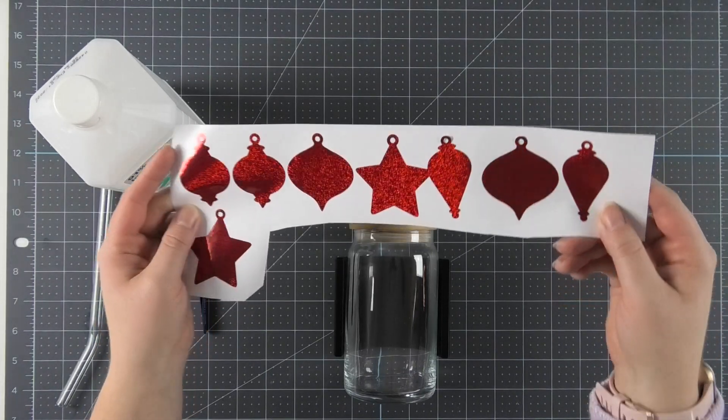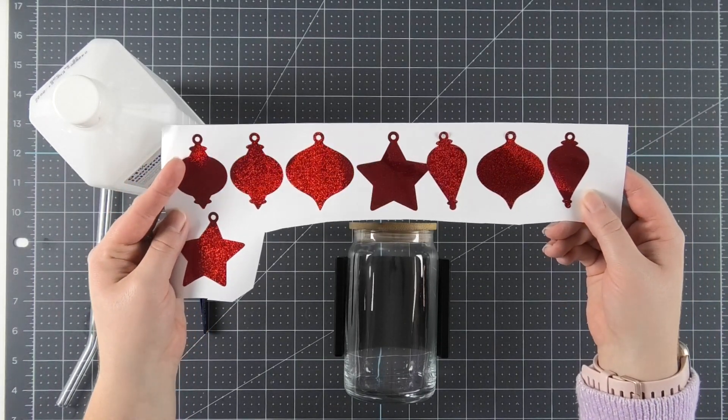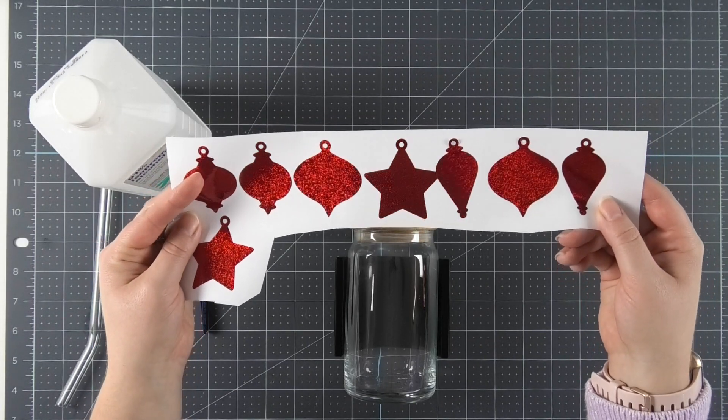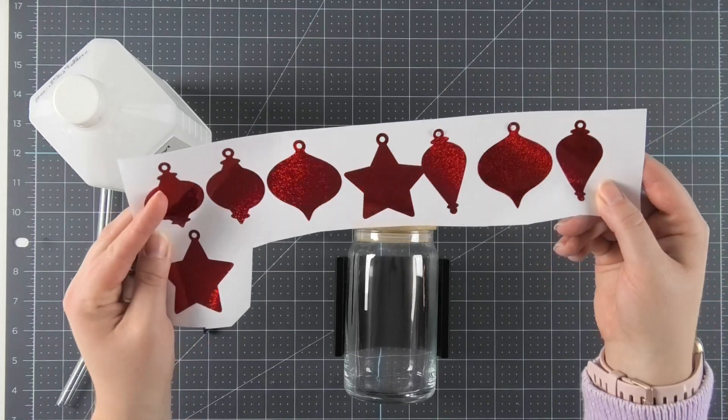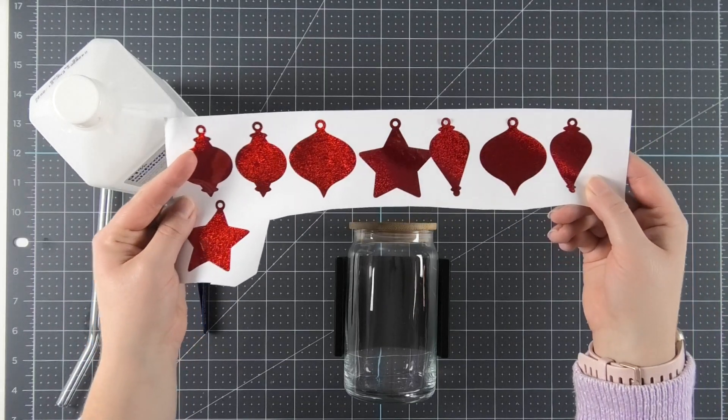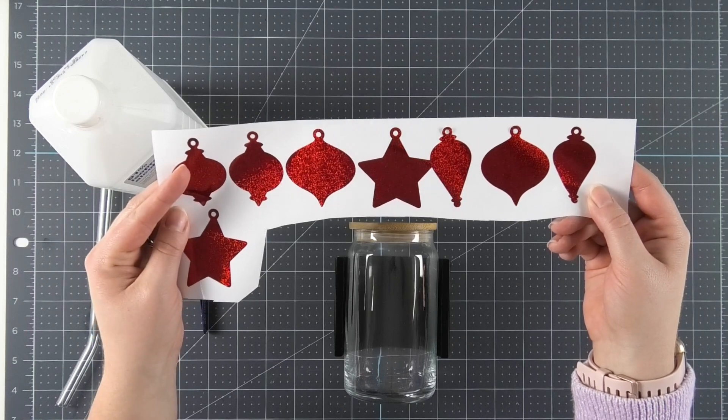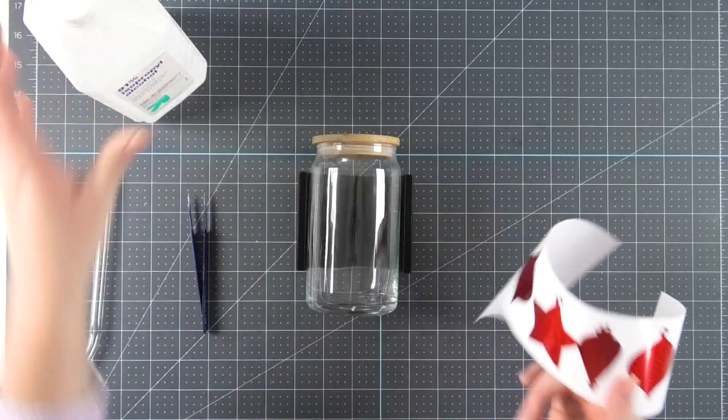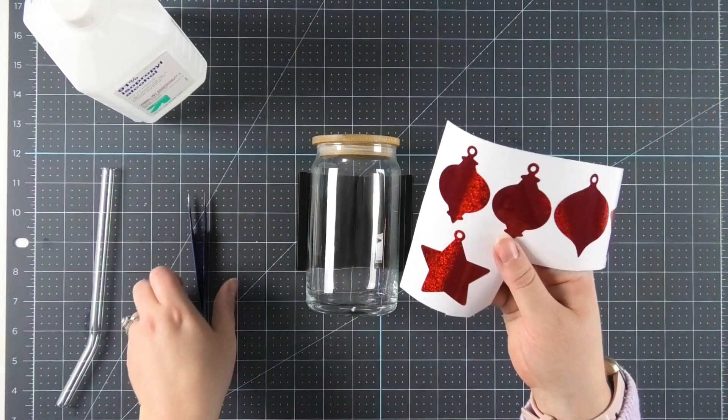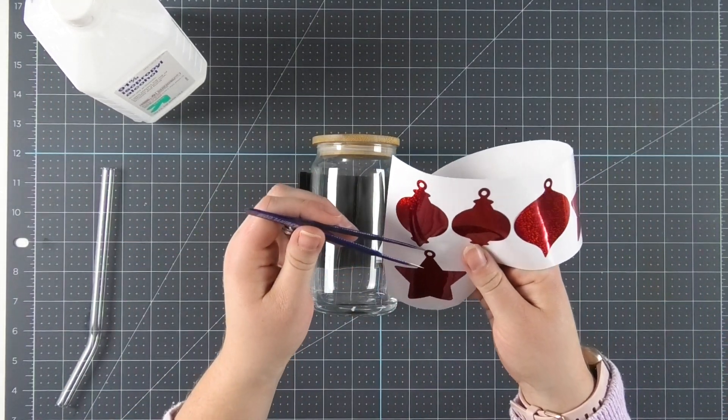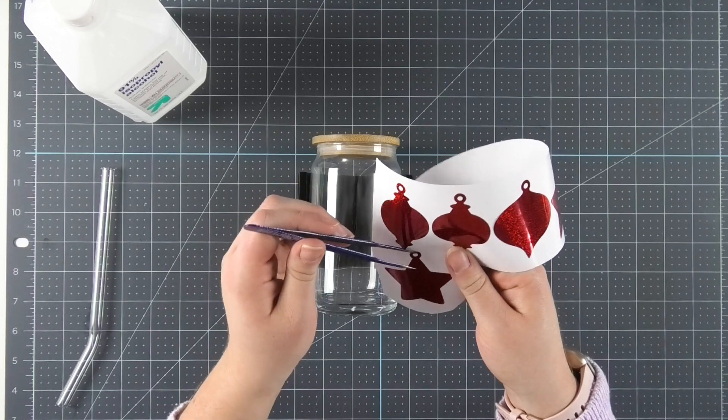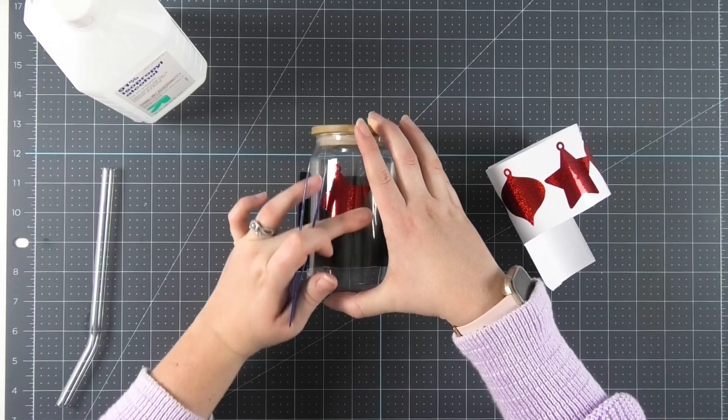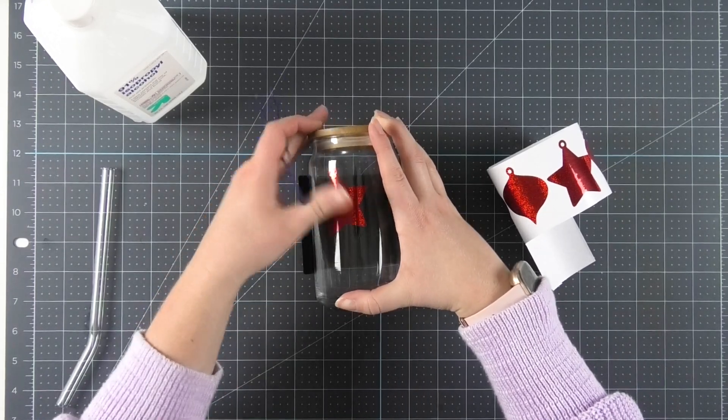The key to keeping projects like this really simple is using really simple shapes. So I chose these ornament silhouettes because they were super easy to cut and weed, but I did decide to cut them out of some holographic vinyl. I chose the Starcraft Magic Deceit because it's really pretty and adds a lot of element of shine. So now instead of using transfer tape on my project, I'm literally just going to use a pair of tweezers and pick up the ornaments and place them around the glass. And don't worry, they'll still get plenty of pressure by me using my fingers over top of them.